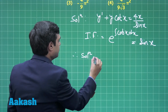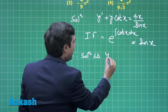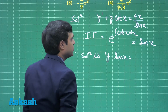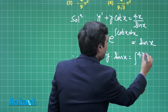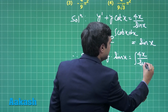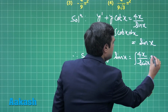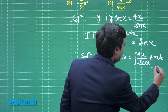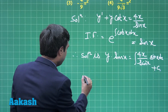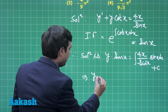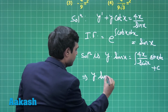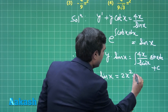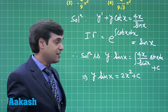Therefore, the solution is y·sin(x) = integral of (4x/sin(x))·sin(x) dx + C. Simplifying, we have y·sin(x) = 2x² + C.